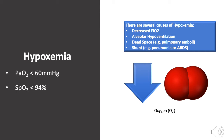Causes of hypoxemia include decreased inhaled oxygen, alveolar hypoventilation, and VQ mismatch. VQ mismatch includes both dead space and shunt. Hypoxemia is common in several pathologic clinical states including pneumonia, ARDS, and pulmonary emboli.